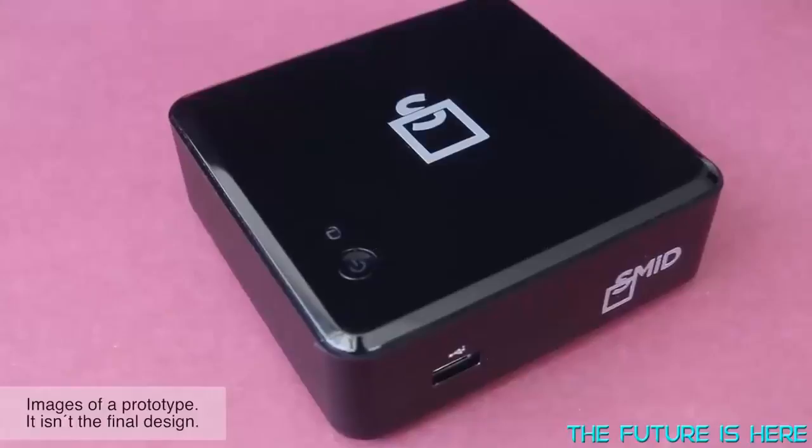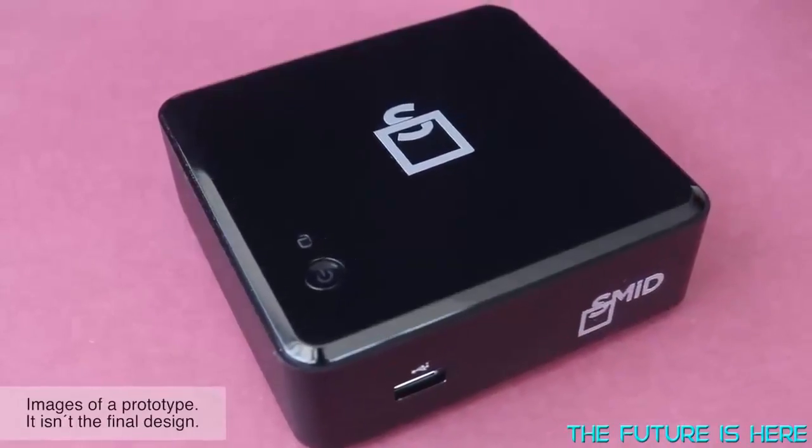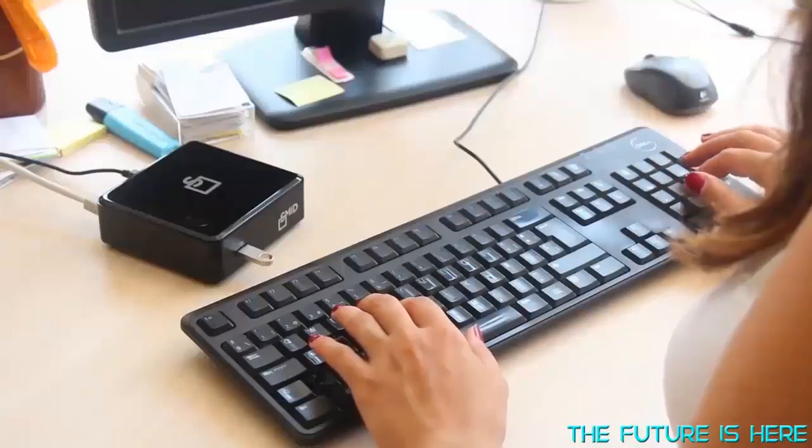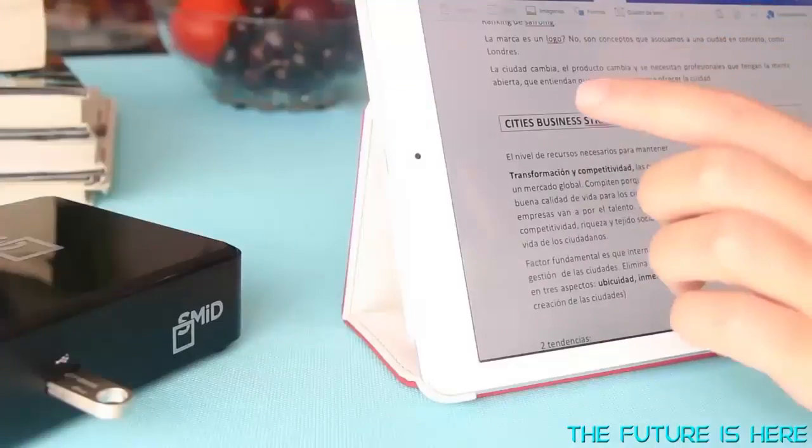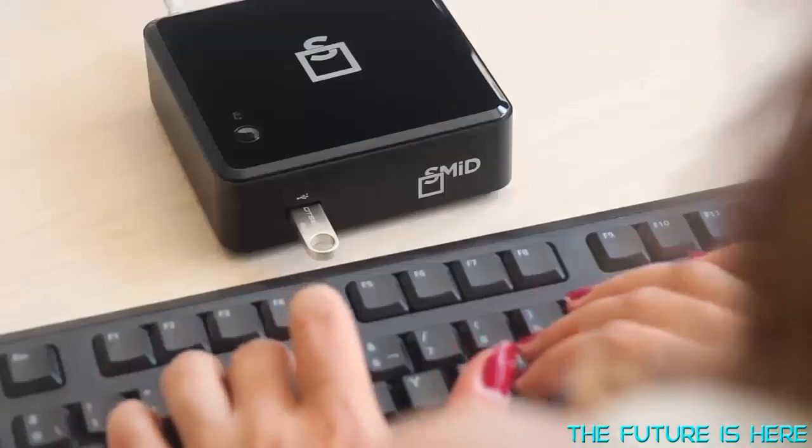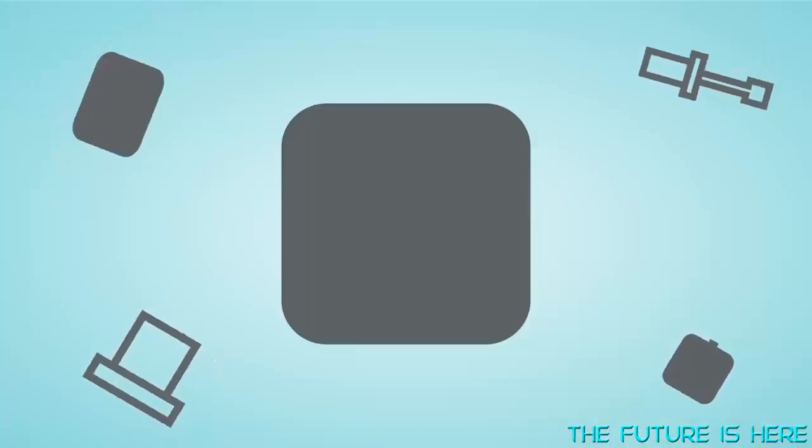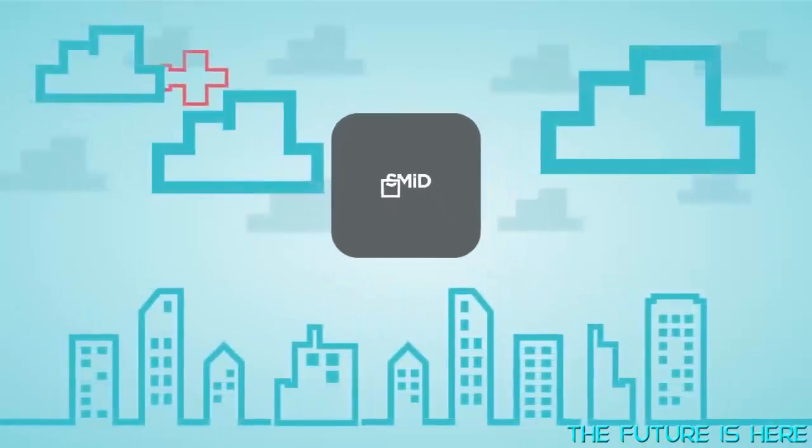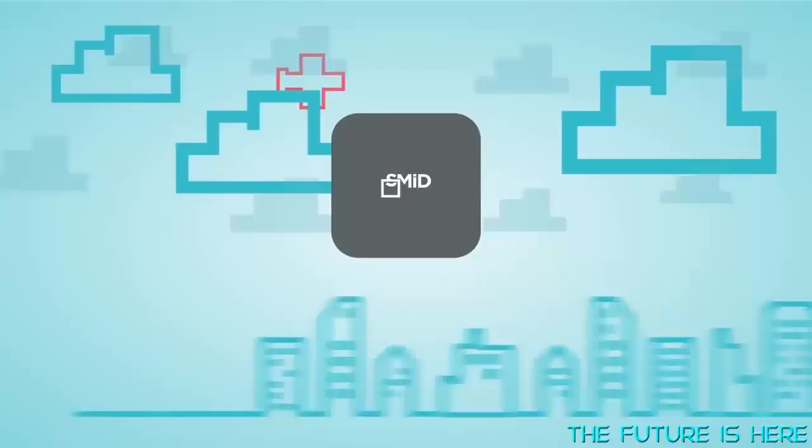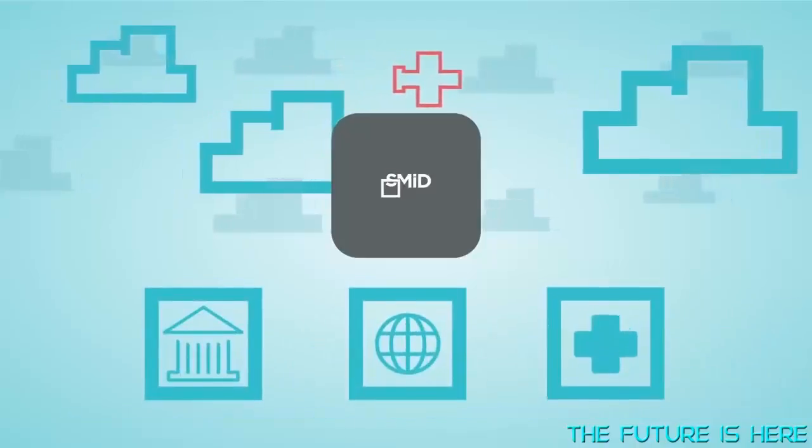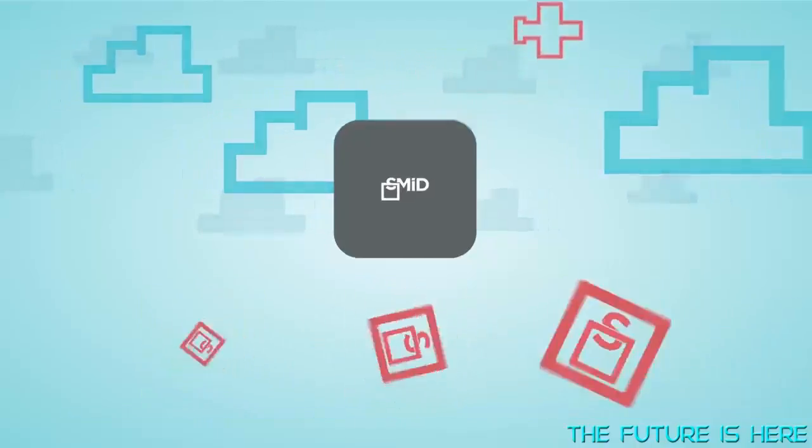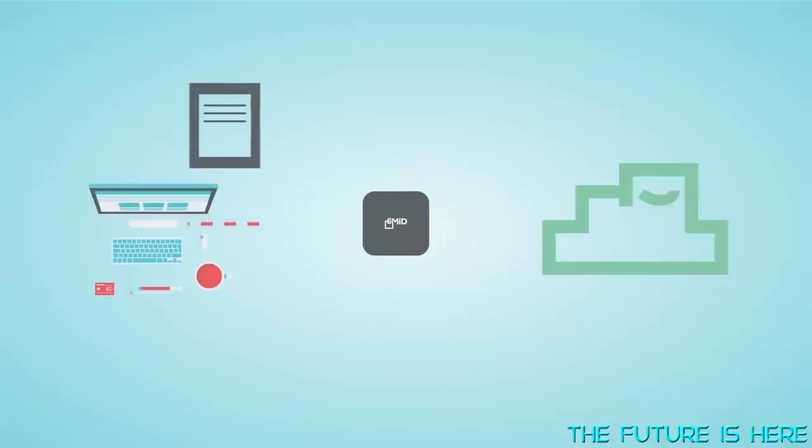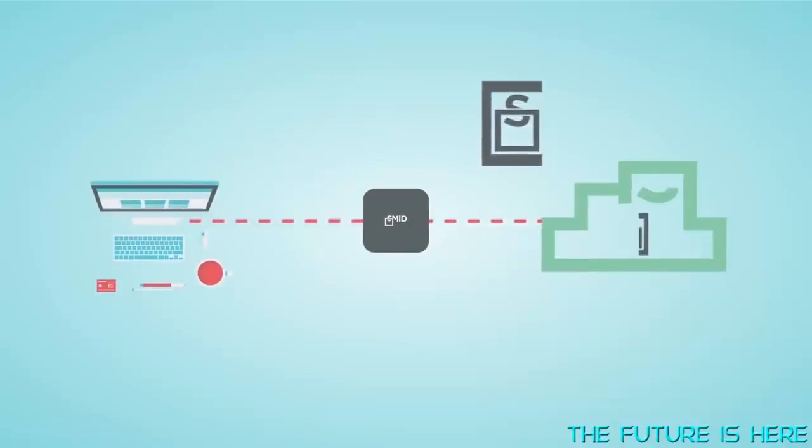But what if you had a small, easy-to-use device that encrypted all your cloud-stored data at the source so your files would appear jumbled, unreadable to everyone but you? There is such a device. It's called Smid, and it's built for people like you who love the cloud but need to make 100% sure that no one will ever see your data. Smid Pro is the only cloud privacy device designed and priced for personal use.